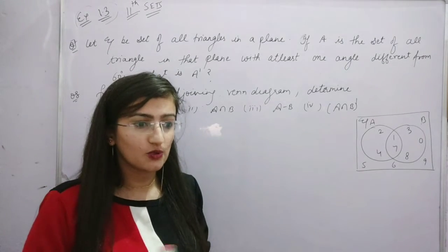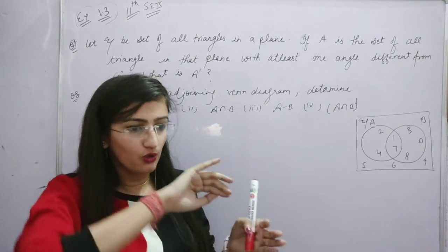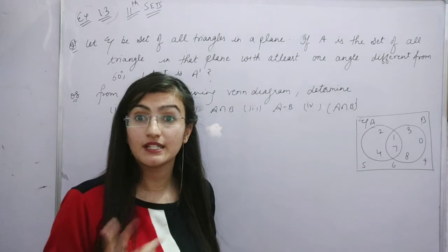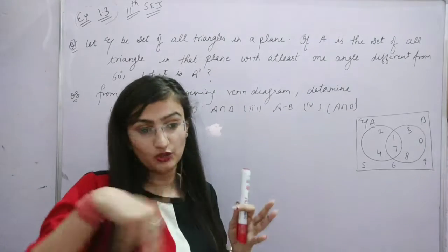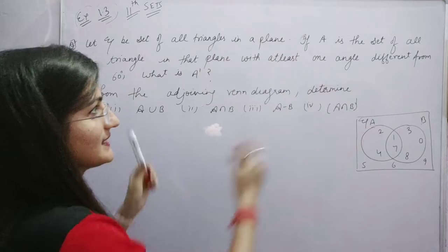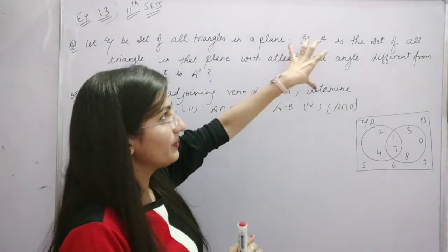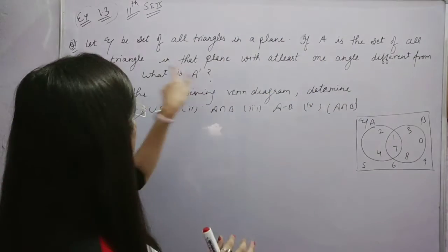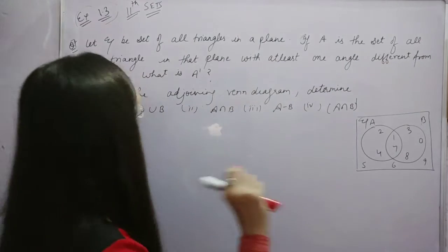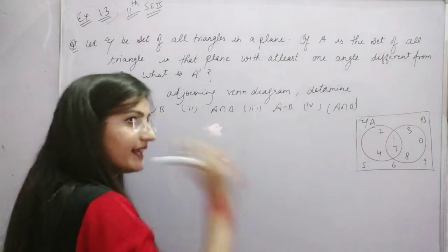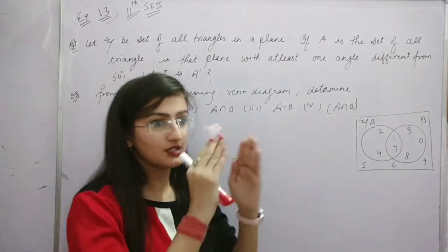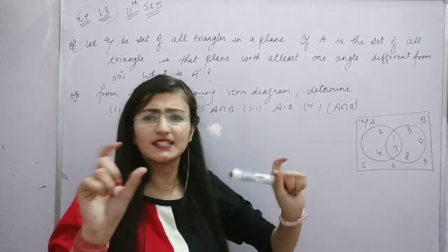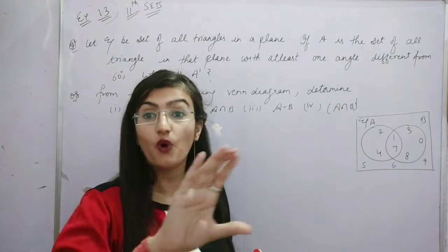It's a simple thing. Which triangle has all three angles equal to 60 degrees? An equilateral triangle. So the complement will be the set of equilateral triangles. Because in the universal set, set A contains elements with at least one angle different from 60 degrees — meaning the complement is equilateral triangles. The complement of set A is the set of all equilateral triangles.